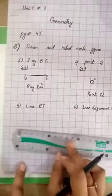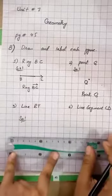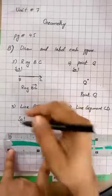Next, line RT. Now, line how do you draw? Line has told you that line is continuous and endless straight path.